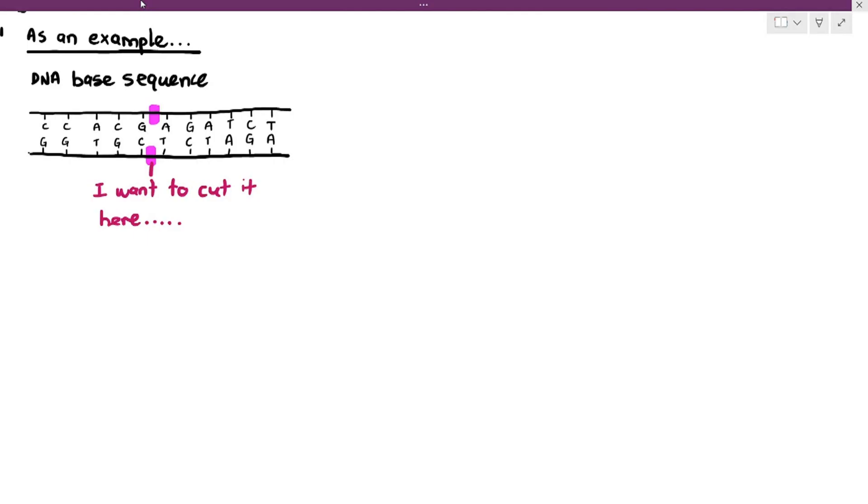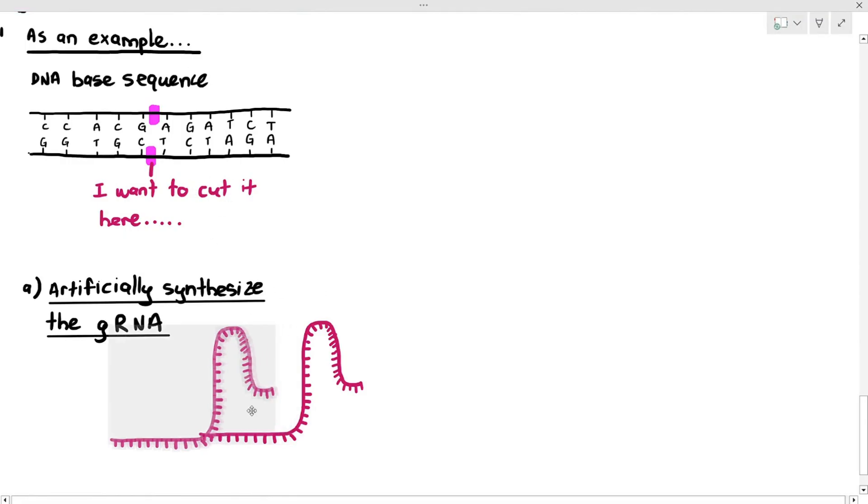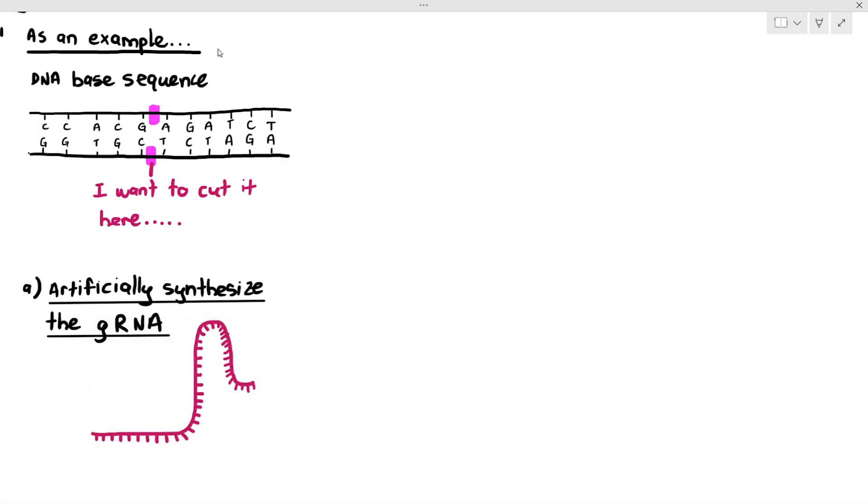Now, the condition in using CRISPR-Cas9 system is you need to know the base sequence. Because if I want to cut the DNA at that particular area, I first need to artificially synthesize the gRNA. And just like in recombinant DNA technology, I told you that we can artificially synthesize genes using a DNA synthesizer, we also have the technology to synthesize RNAs.